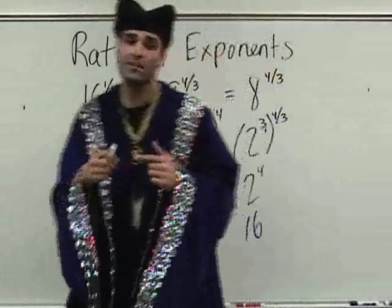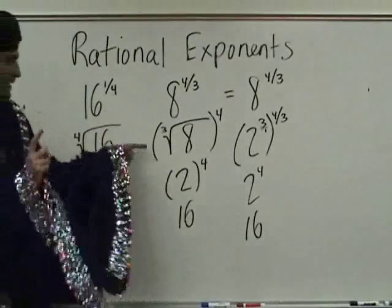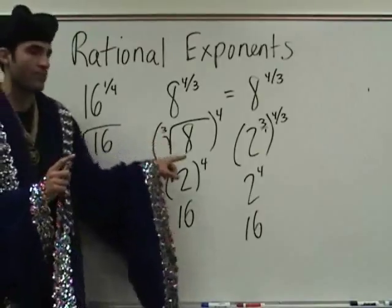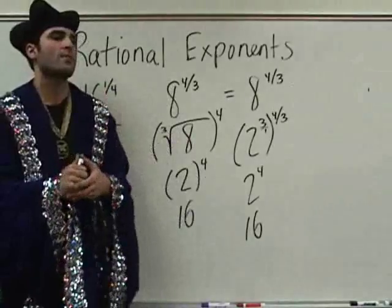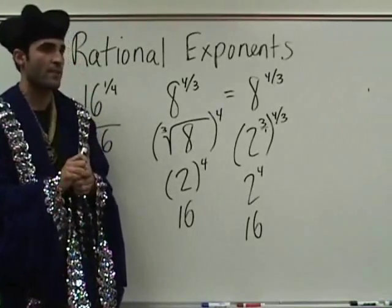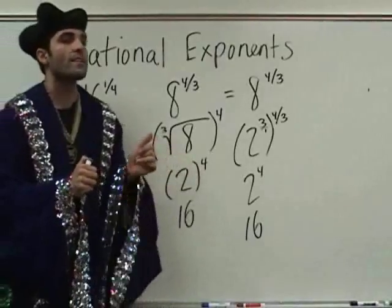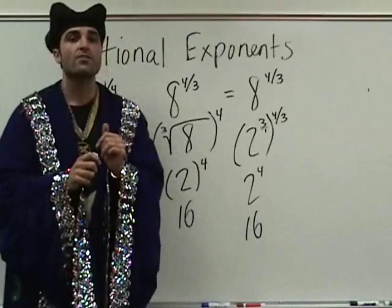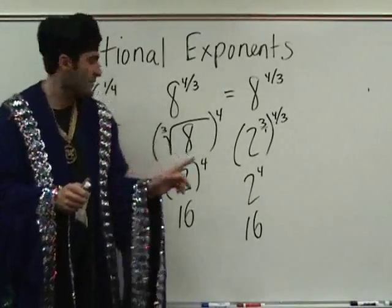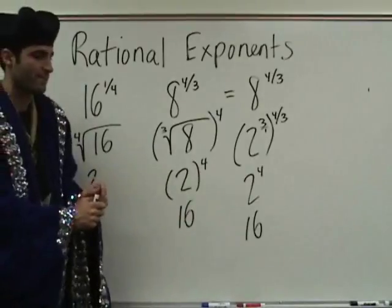Either way is fine, but you need to know how to do both. Can you explain what you did in the middle step? Okay, are you okay with the cube root of eight? Can you explain in a loud voice what the cube root of eight means? A number times itself three times equals eight. What is that number? Two. Right — cube root means what times what times what, and that's where two comes from. Two to the four is sixteen.